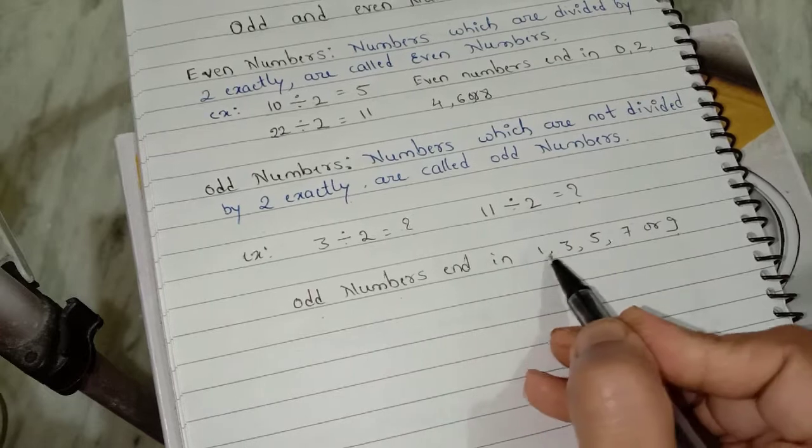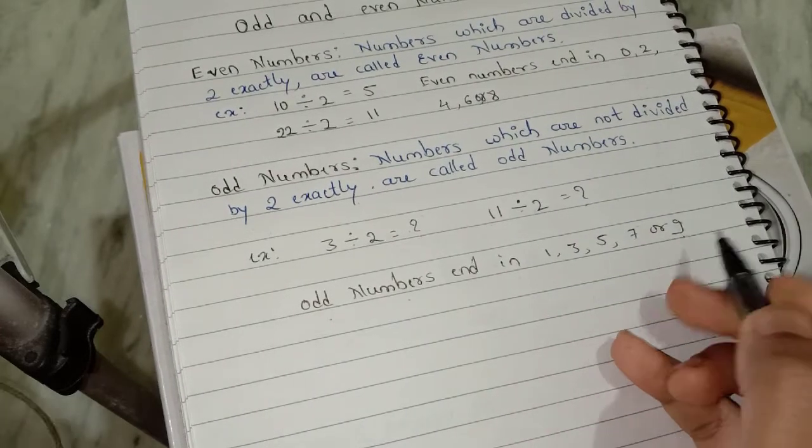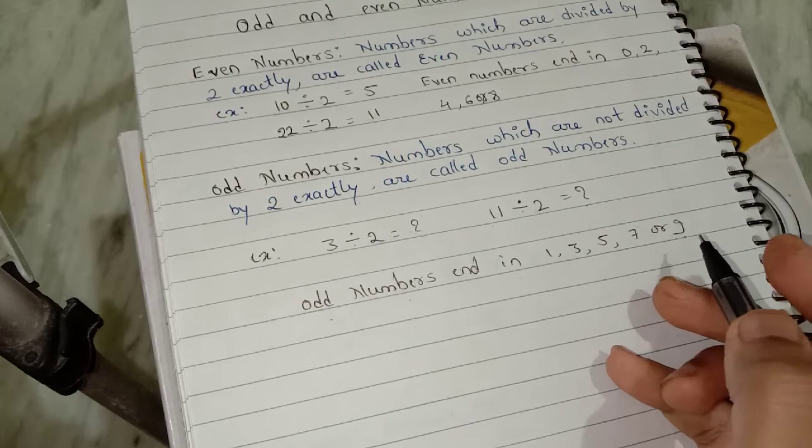And odd numbers ends in 1, 3, 5, 7 or 9. Thank you.